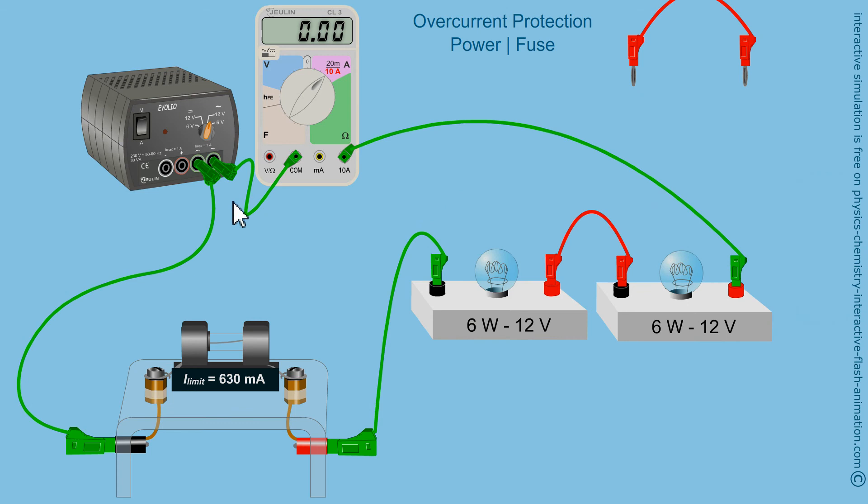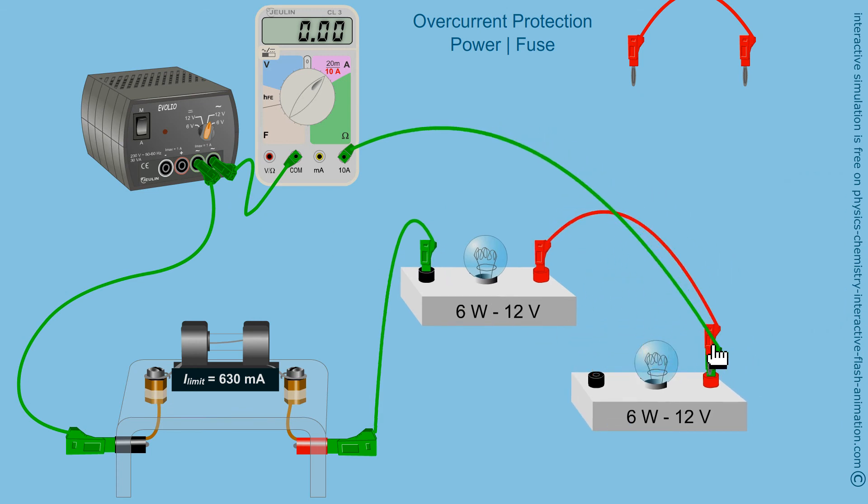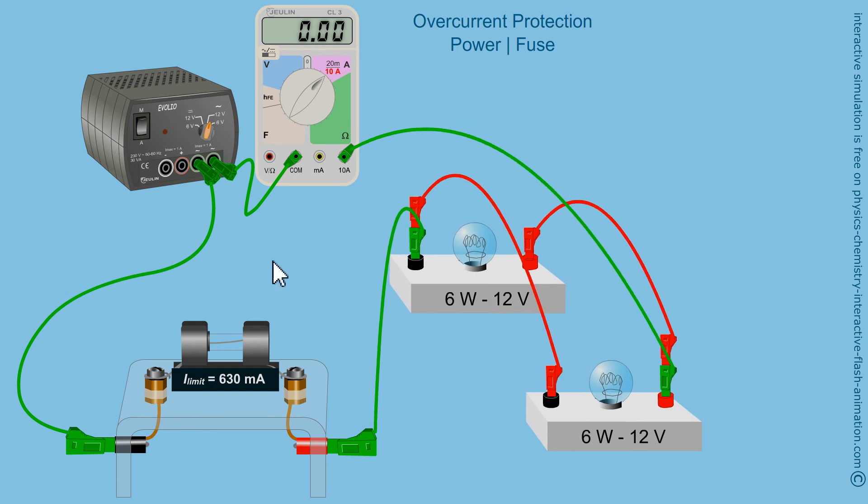On the other hand, what could happen if I connect my generator with two bulbs in parallel? The current here, it will not be far from double. Close to 1 Ampere. The fuse will blow.